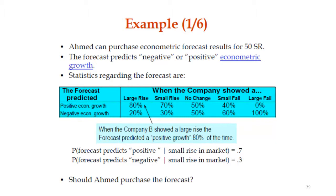First, a review of what we discussed in the previous lecture on the Bayesian theorem. Sometimes we have sample information available - experts insist on using additional information. How can this be incorporated with the previous information? In the expected value criteria, each state of nature has corresponding probabilities. This additional information is incorporated using the Bayesian theorem, giving us new probabilities known as the posterior probability.